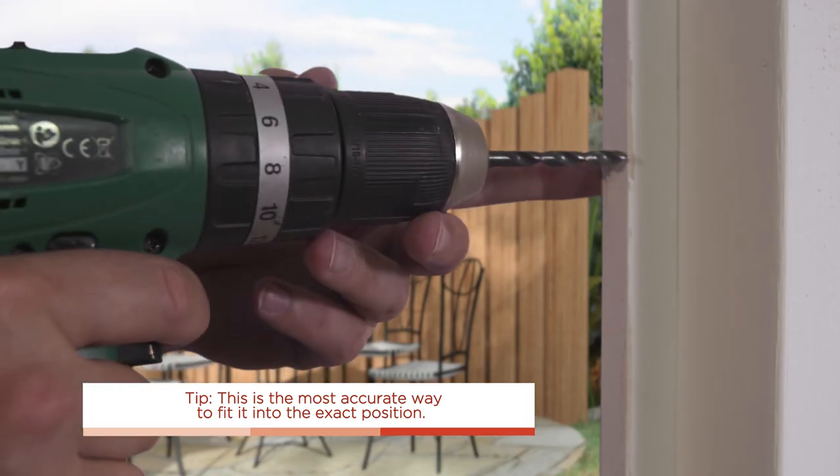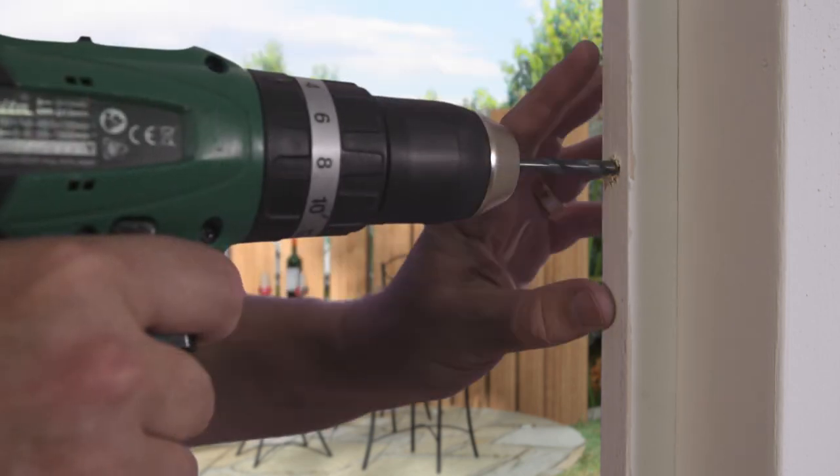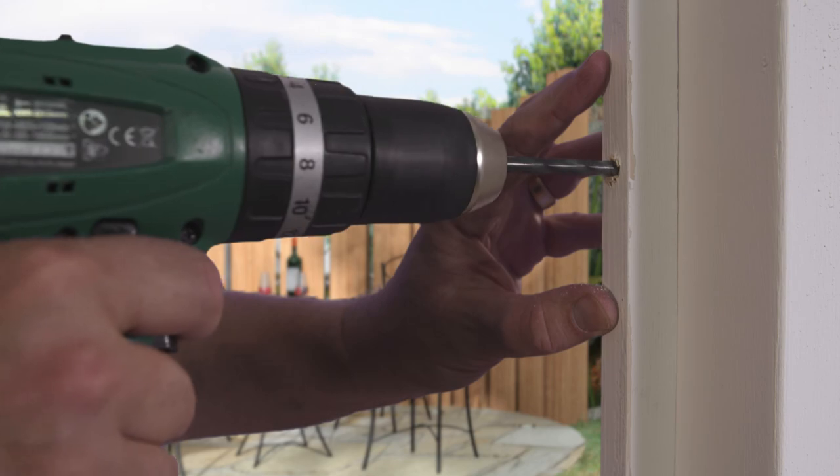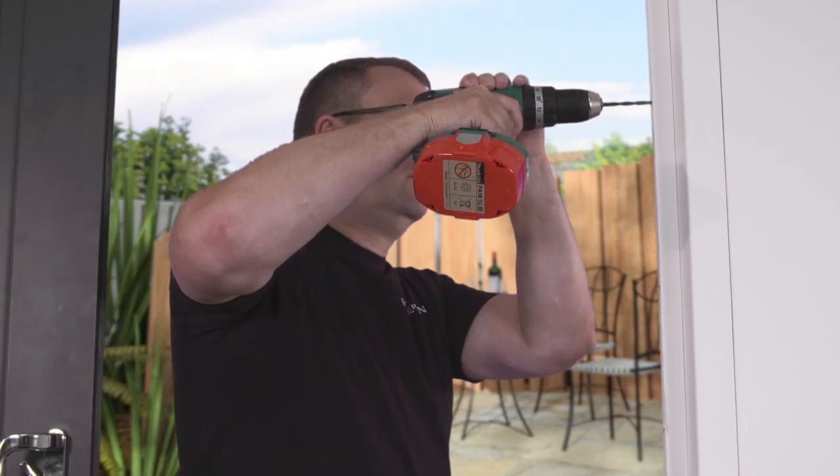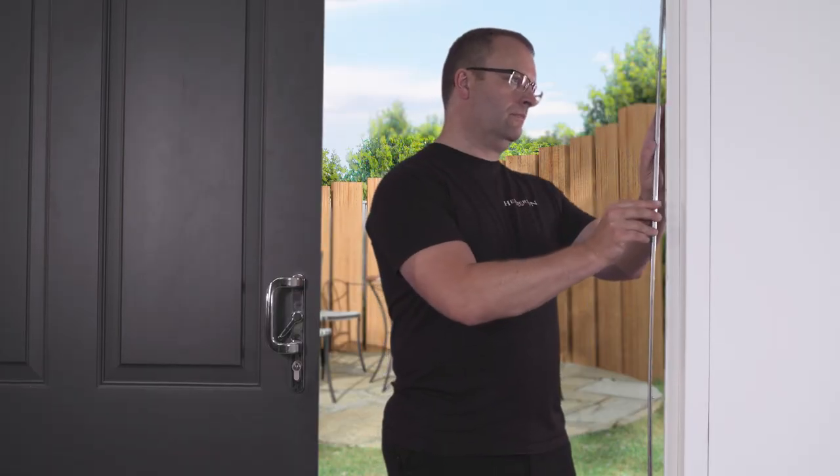Move the door with slight force into the jamb so that the keep plate dints its position into the wood. Any slight discrepancy in the placement of the keep plate will cause the lock to function incorrectly. Drill holes into the markings that you have just created.